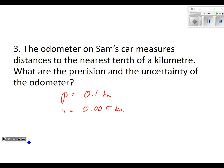The odometer on Sam's car measures distances to the nearest tenth of a kilometer. What's the precision and uncertainty of the odometer? If it's nearest tenth of a kilometer, what is a tenth? That's 0.1, right? Tenths, hundredths, thousandths, all that stuff. So the precision is 0.1 kilometers and the uncertainty is half of that. 0.1 divided by 2 is 0.05. Yeah, I'll just cross that out.